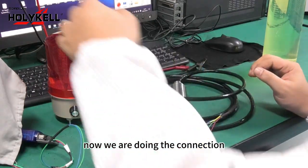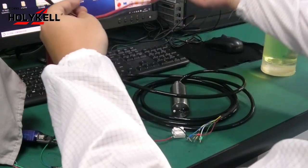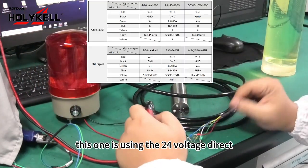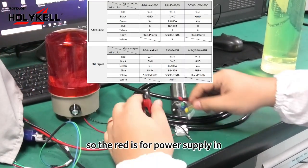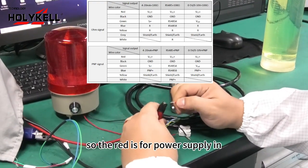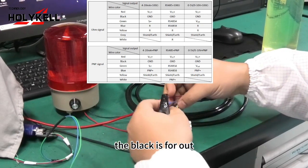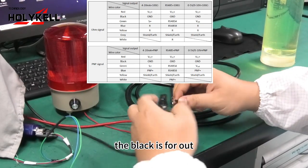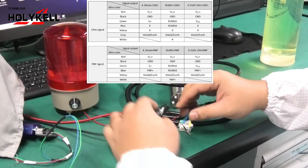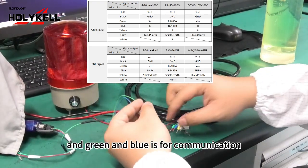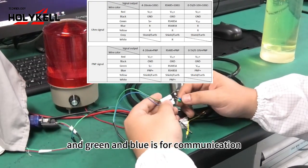This one is using 24-volt direct current. The red is for power supply in, the black is for out, and green and blue are for communication.